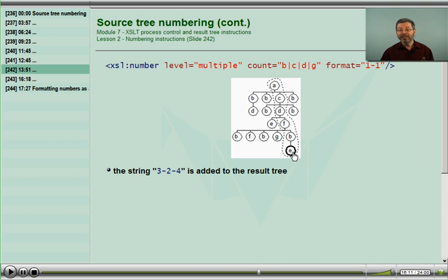E is not being counted in the count, so there's nothing more to add, and that string has been added to the result tree.